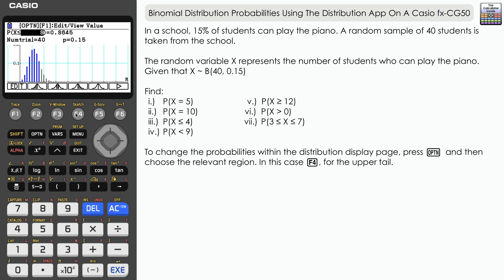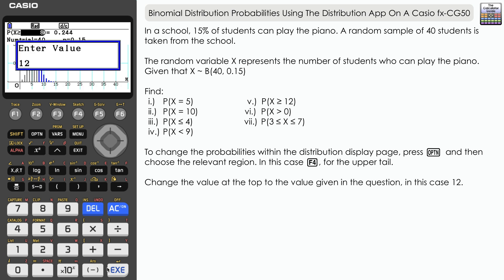Now by default it has just kept the value of 8 in there from our previous calculation, but we want to work out the probability X is greater than or equal to 12. From the look of the distribution, it seems not very likely that we're going to get 12 or more students who play the piano.